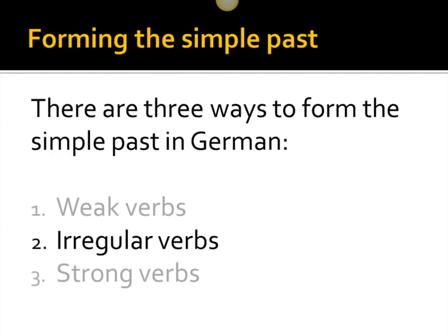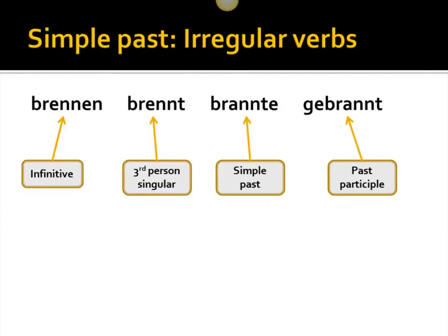There are basically three ways to form the simple past in German. A video I created a couple days ago looked specifically at weak verbs, and if you have a question about that, I refer you to that video. What we're going to be looking at today is irregular verbs — that's how I learned them. Other people call them mixed verbs. What makes an irregular verb or a mixed verb? We look at Brennen here, to burn, up on the screen.